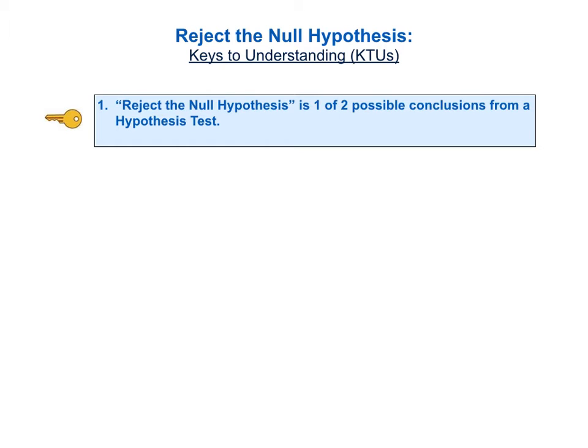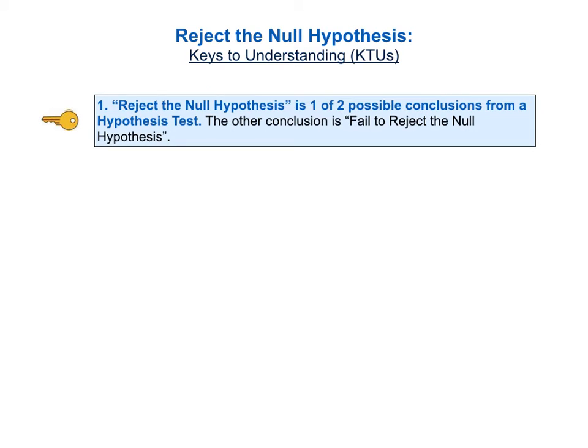The first part of key to understanding number one is: reject the null hypothesis is one of two possible conclusions from a hypothesis test. And the second part of KTU number one is: the other possible conclusion is fail to reject the null hypothesis.